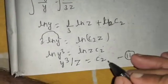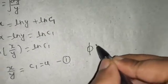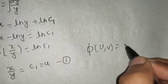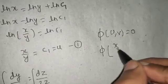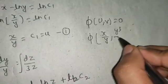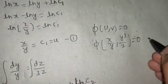You can also say this to be equal to u, this to be equals to v. Final solution is φ of u comma v equals to 0, so it will be φ of x/y comma y³/z, this equals to 0.